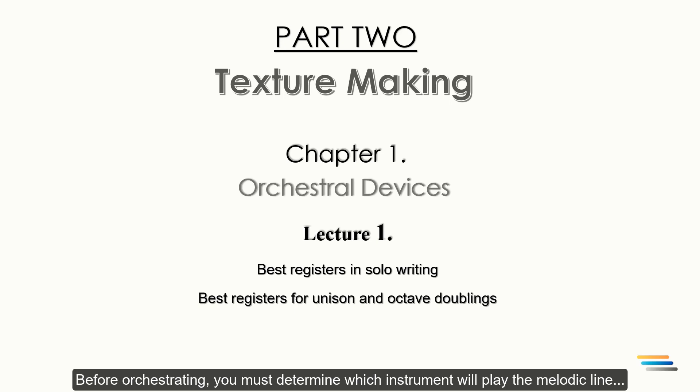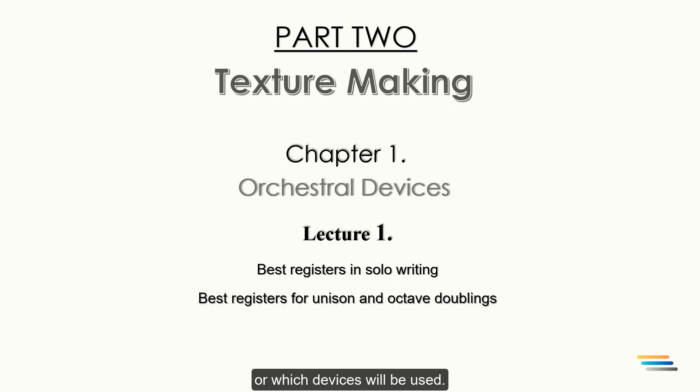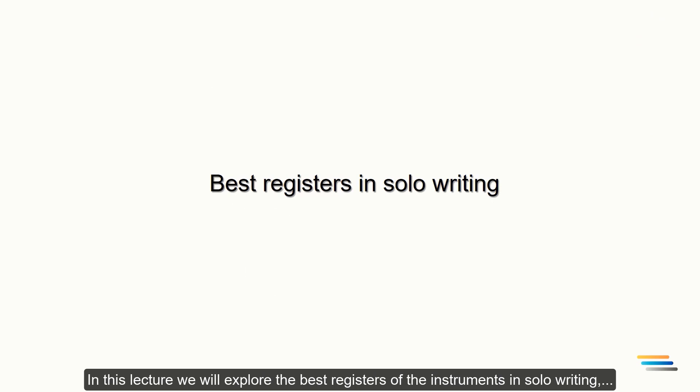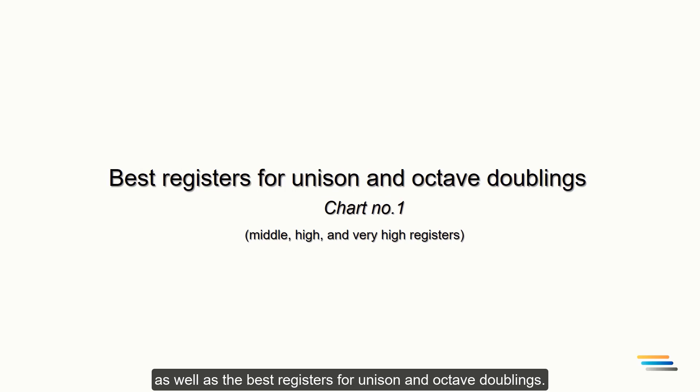Before orchestrating you must determine which instrument will play the melodic line or which device will be used. Then you can create an orchestral texture using different masses. In this lecture we will explore the best registers of the instruments in solo writing as well as the best registers for unison and octave doublings.